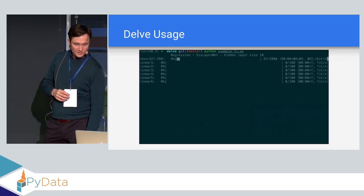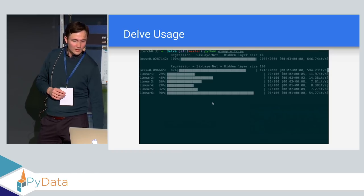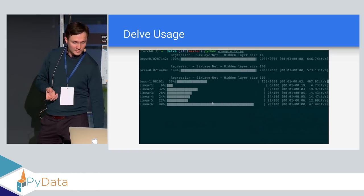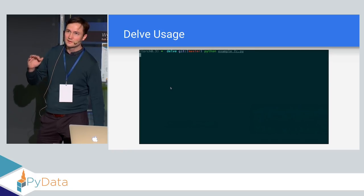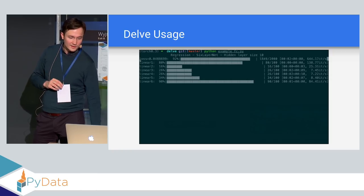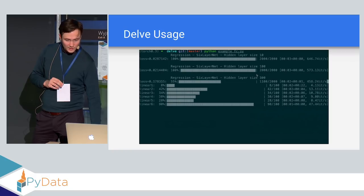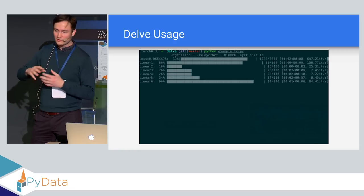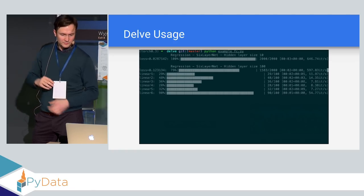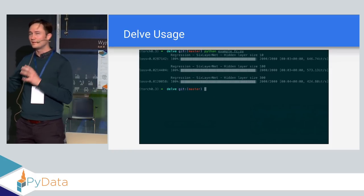Here we have a six-layer fully connected network doing a regression task. This shows over training with models of three different layer sizes in the linear 1 space. As you increase from 10 to 100 to 300 units, the first layer's saturation actually decreases — you increase the size and saturation decreases. Then in the linear 2 layer, you see a compensatory increase. When the first layer decreases saturation, the second layer increases.